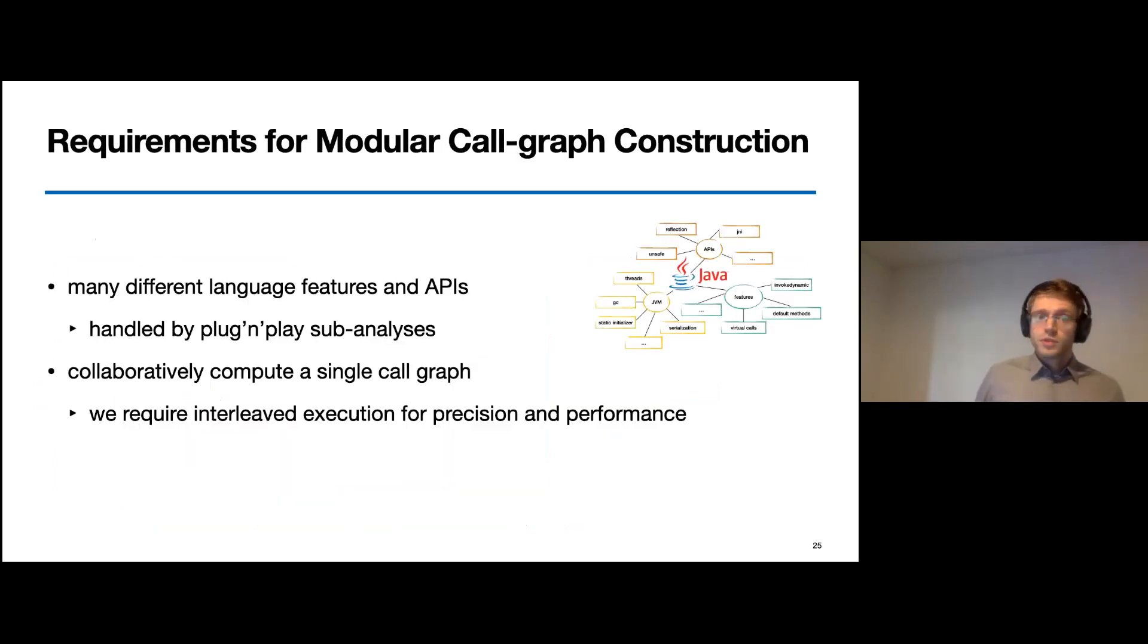The results of our studies showed that we must consider many different features. However, supporting them in a monolithic analysis is not really an option. Since then, the already complex analyses would gain even more complexity. Instead, it would be better if we would have a set of pluggable sub-analyses that handle individual features and APIs.